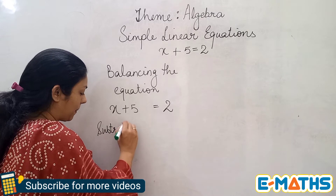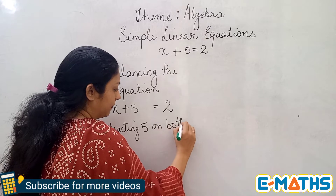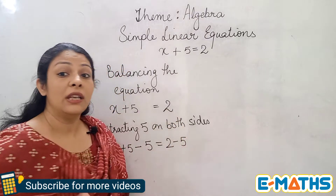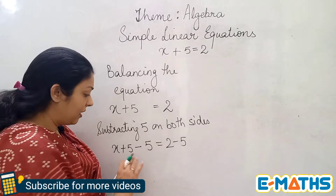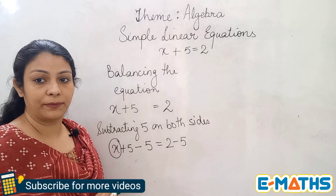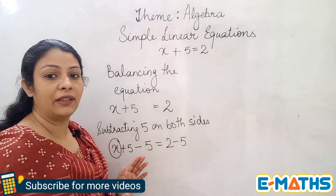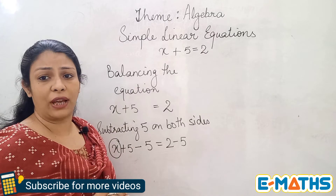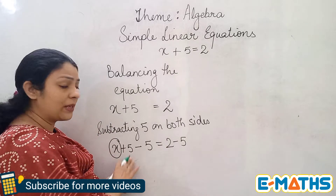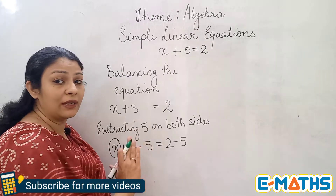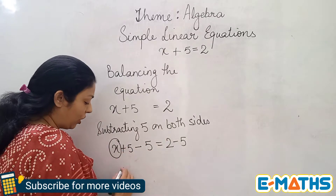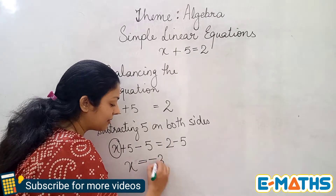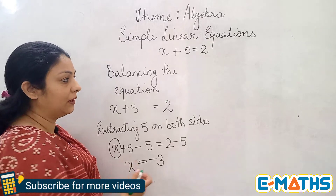Subtracting 5 on both sides gives us x plus 5 minus 5 equals 2 minus 5. The purpose is to have only the variable on the left hand side, removing the constant term. Since plus 5 and minus 5 cancel to zero, we are left with x equals 2 minus 5, which is minus 3. That's how we solve it by the balancing the equation method.